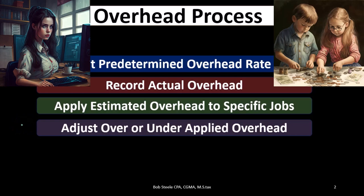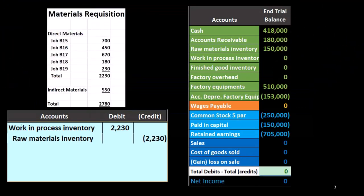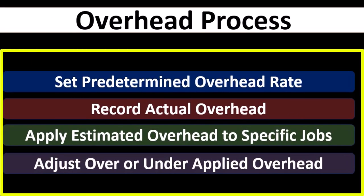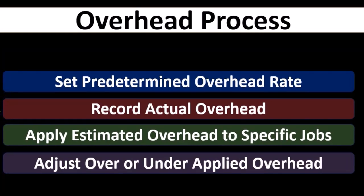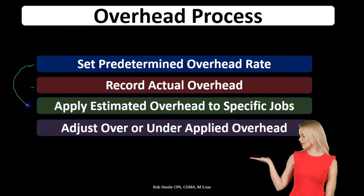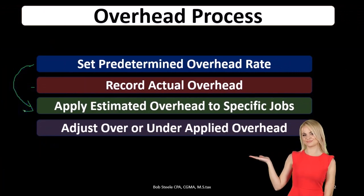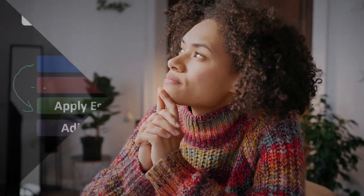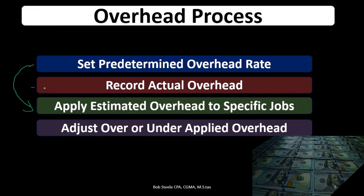So here's the process we will go through. Let's think about the costs that we'll be dealing with. I'm going to do this a little bit out of order because the actual costs we deal with involve recording, and although the predetermined rate is set up at the beginning, it applies directly to the process of applying out the overhead. So first, I'll think about the actual costs, thinking about what would happen in terms of a GL account — costs that will be incurred that we need to allocate to particular jobs.